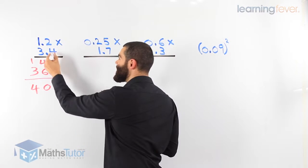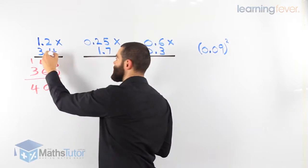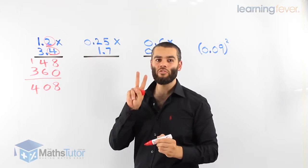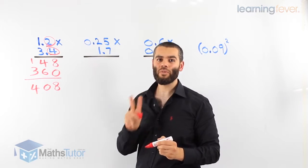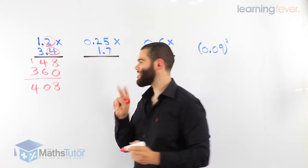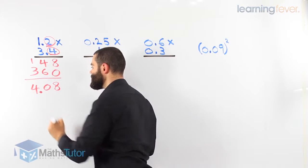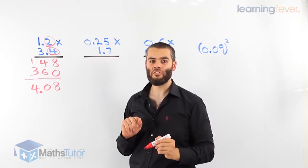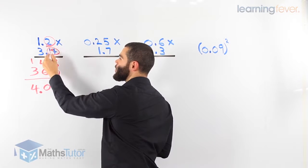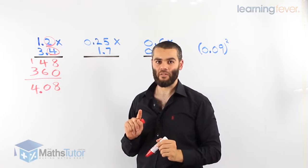So how many decimal places are here? There is one here and one there. So in the question there are two decimal places. In the answer we need to have two decimal places. So where do we put our point? 4.08. Two decimal places in the question, two decimal places in the answer.